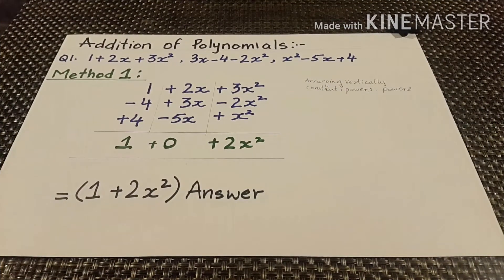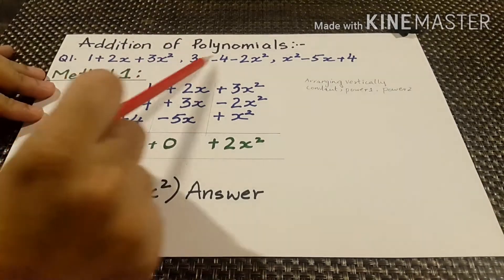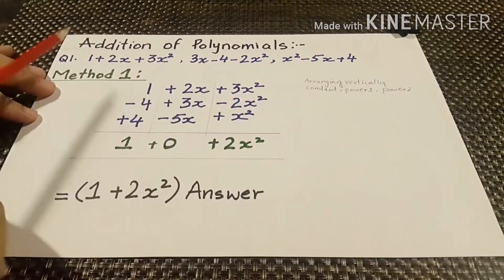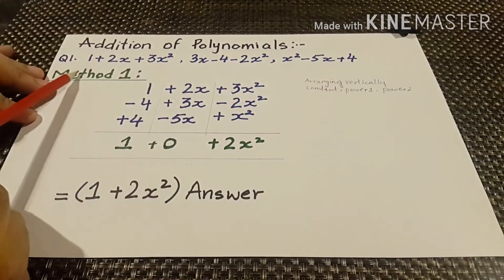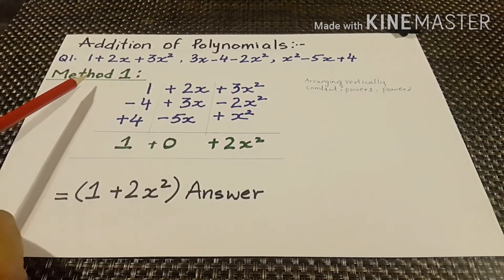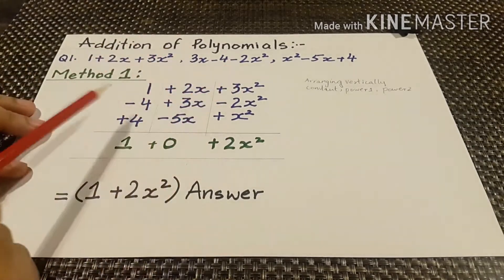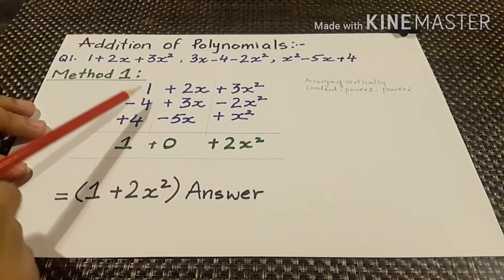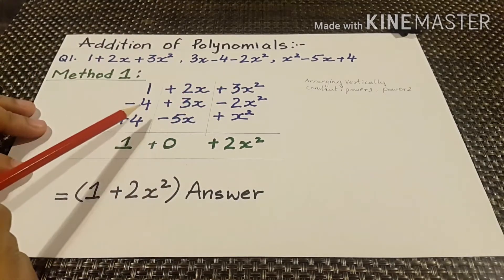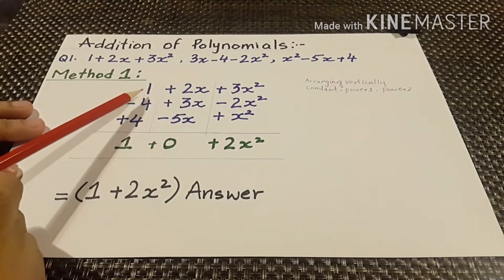Today our topic is addition of polynomials. Question number one, we have to add these three polynomials of degree two. The very first method of adding these polynomials is the vertical method, in which we will arrange the values.